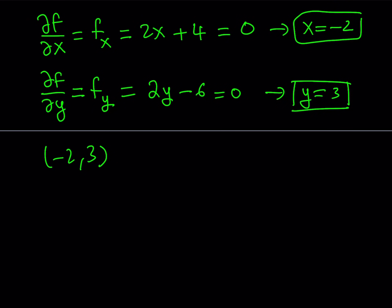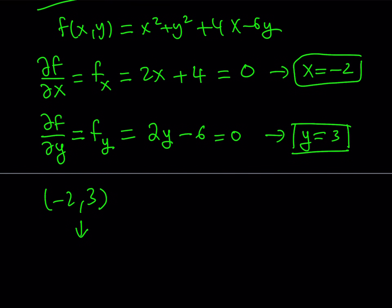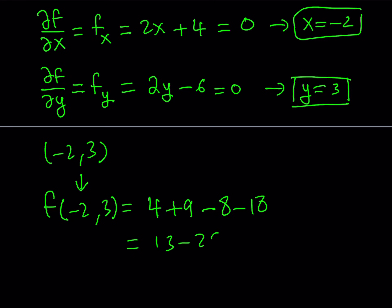Let's proceed with these x and y values. My original function: I'm going to be evaluating f of negative 2 comma 3, and that is going to be negative 2 squared plus 3 squared plus 4 times negative 2 which is negative 8, minus 6 times 3 which is 18. So I'm getting from here 13 minus 26 and f of negative 2 comma 3 gives me negative 13 at the end. So this will be the minimum value of my expression.